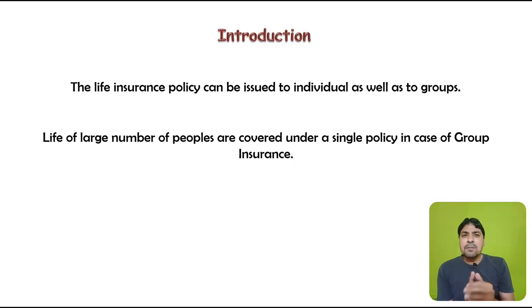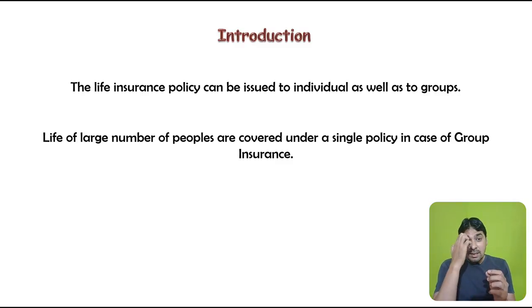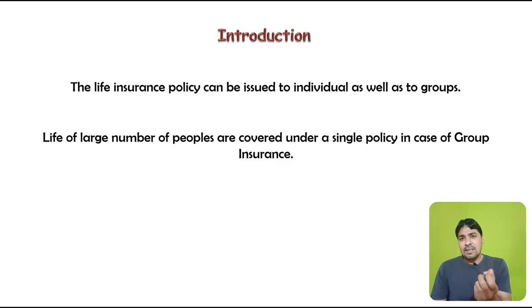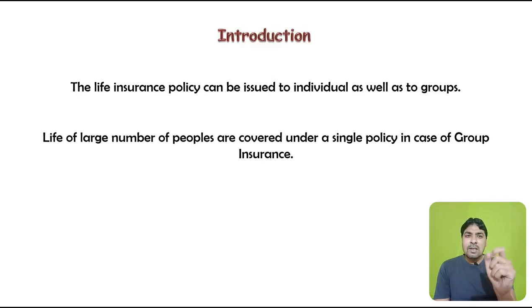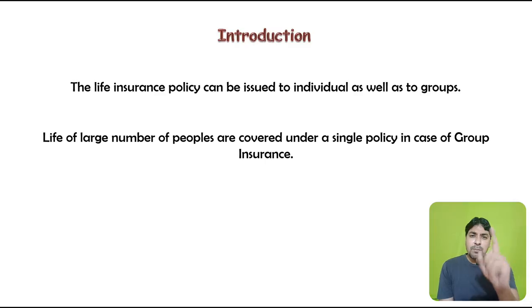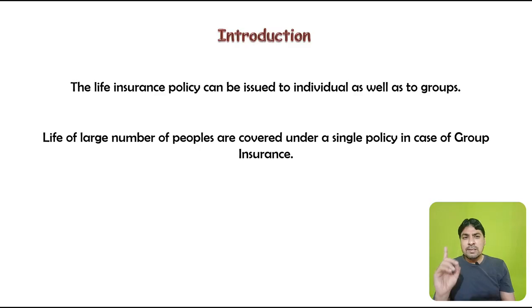The lives of a large number of people are covered under a single policy in the case of group insurance. Whenever the lives of various persons are covered under a single policy, that policy is known as a group insurance contract. For example, if 50 to 100 people are covered under a single policy, that is a group insurance contract.